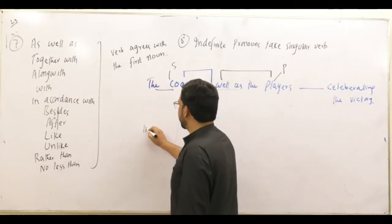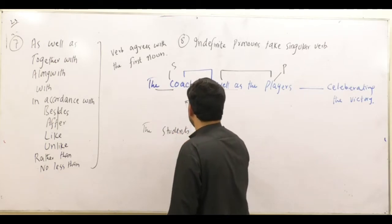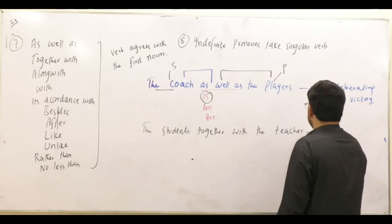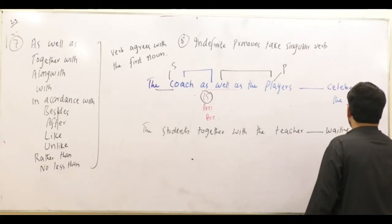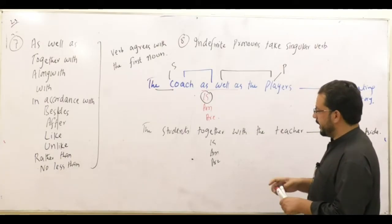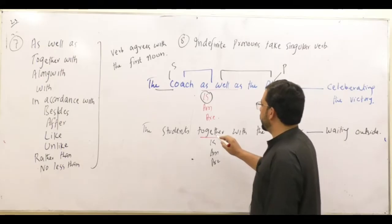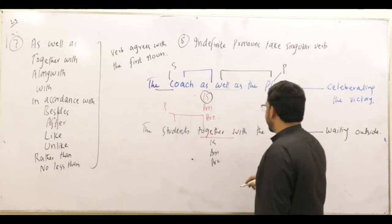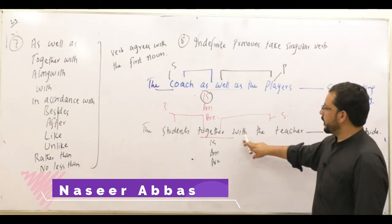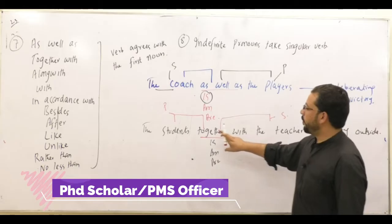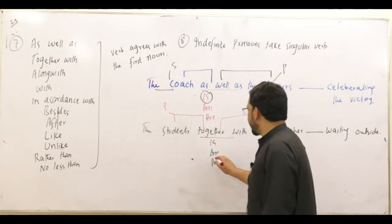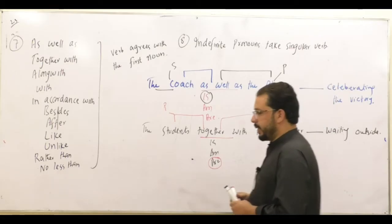The students, together with the teacher, dash waiting outside — is or are? Now we have 'together with'. Before 'together with' we have 'the students', which is plural, and after we have 'the teacher', which is singular. But when the phrase 'together with' comes, our verb agrees with the first noun. The first noun here is 'the students', which is plural. So: The students, together with the teacher, are waiting outside.